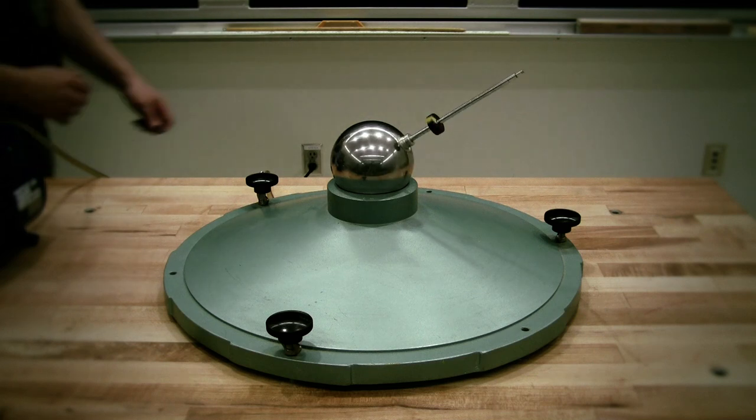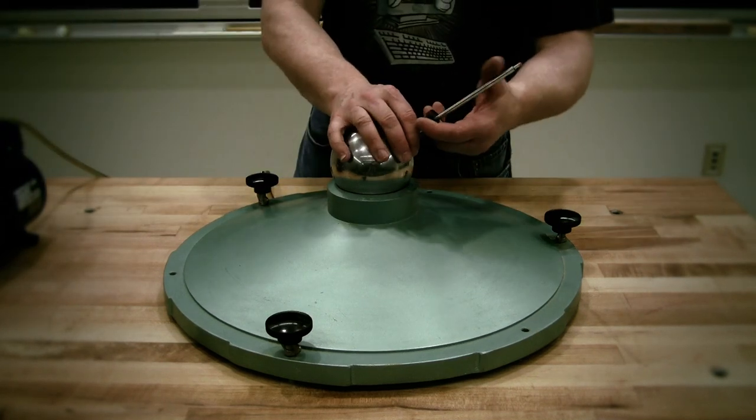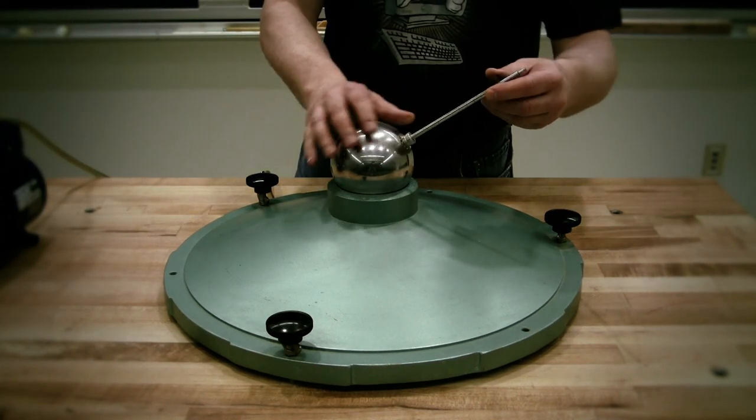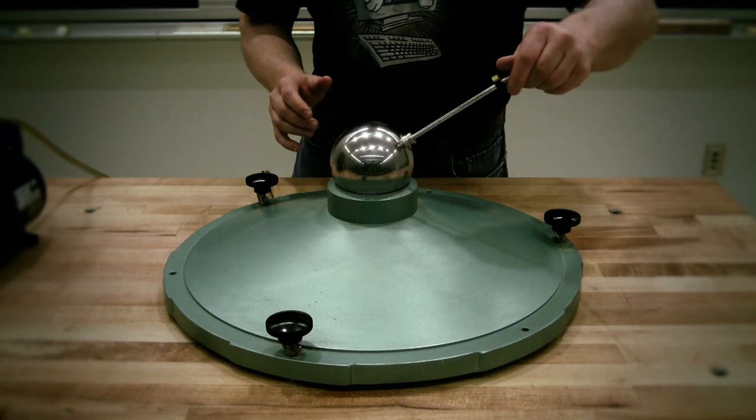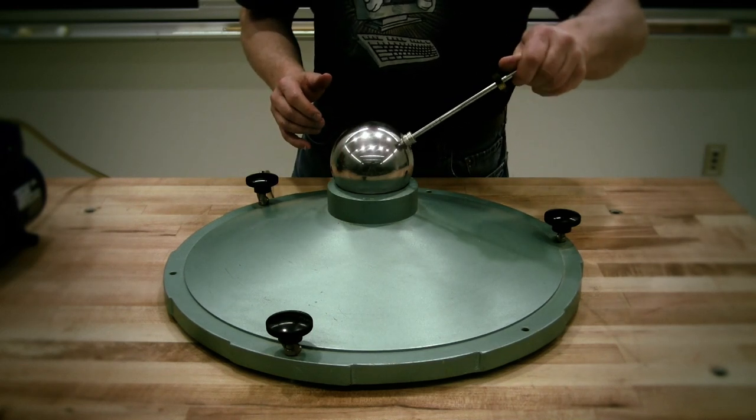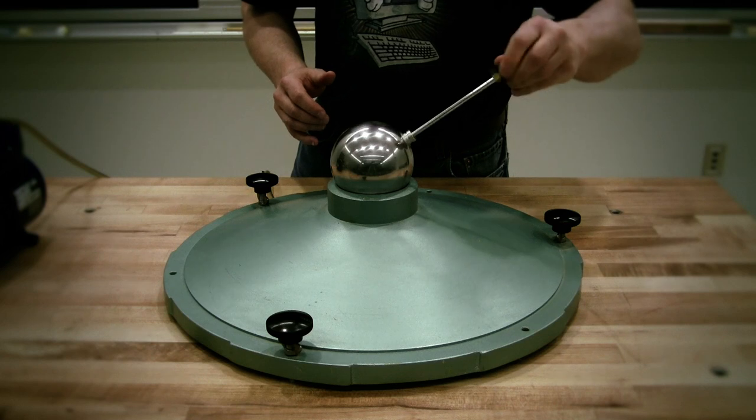I now move the weight outward. The ball is no longer balanced and it is more analogous to the oblate Earth. When I spin up the ball, we can now readily observe the slow change of the axis of rotation due to precession.